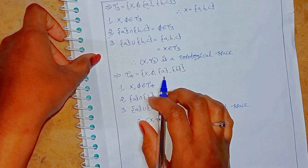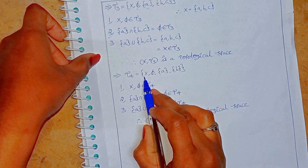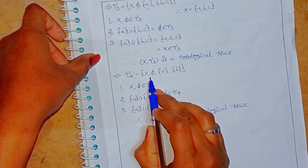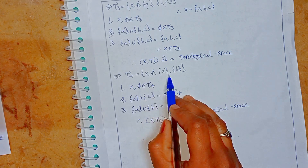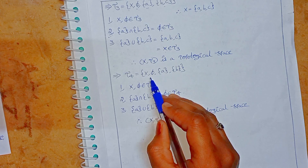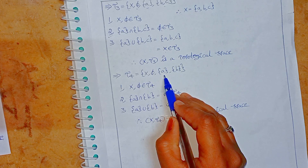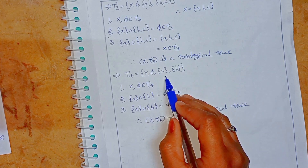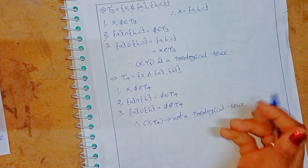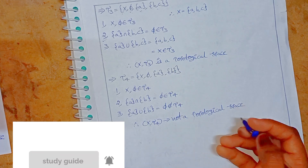Now tau4 = {X, ∅, {a}, {b}}. First condition — satisfied. Second condition — X ∩ ∅ = ∅, X ∩ {a} = {a}, ∅ ∩ {a} = ∅. Third condition — X ∪ ∅ = X, X ∪ {a} = X, ∅ ∪ {a} = {a}. But {a} ∪ {b} = {a,b}, and {a,b} is not in tau4. Therefore (X, tau4) is not a topological space.